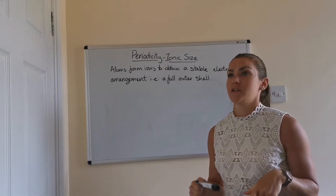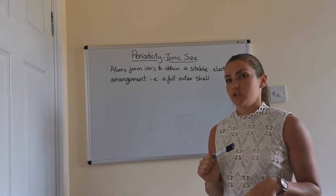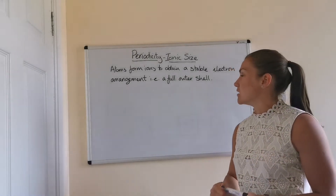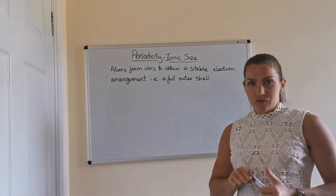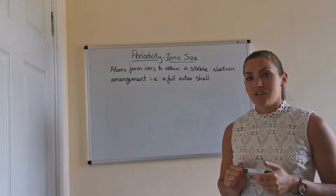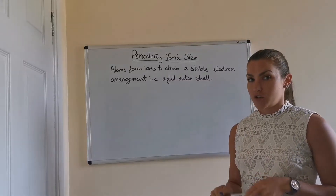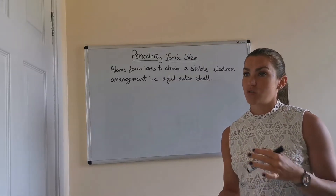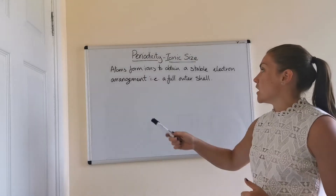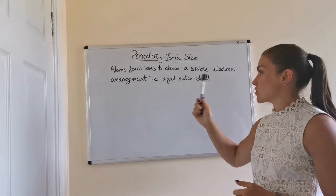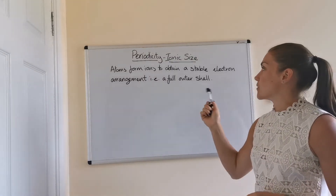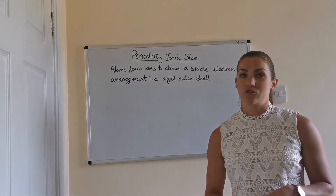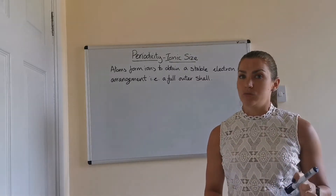Now that we've looked at atomic size, we're going to look at how we can compare ionic size. What you have to remember from National 5 is that ions are charged particles, so they have either lost or gained electrons — atoms that have lost or gained electrons to form a stable electron arrangement, which means they've got a full outer shell of electrons like the noble gases.